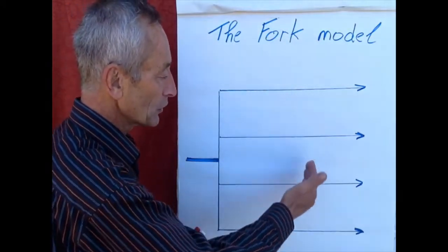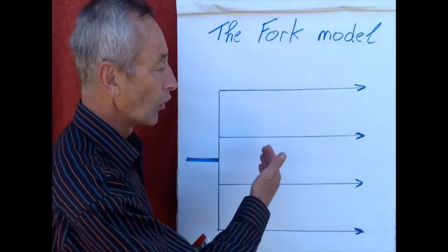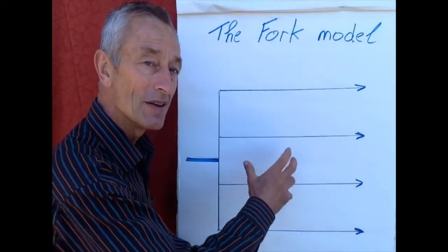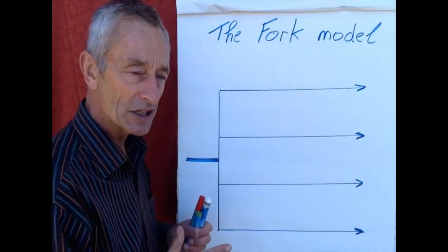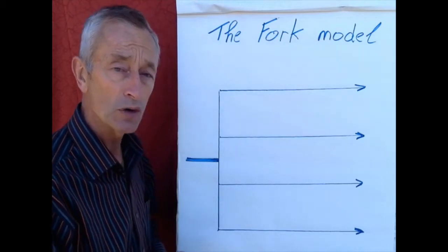The fork model consists of four tracks of progression that are independent from each other but related. Let me explain that, starting with something you may know already.